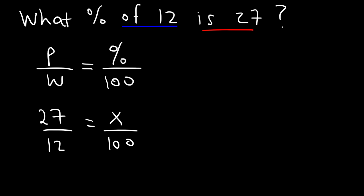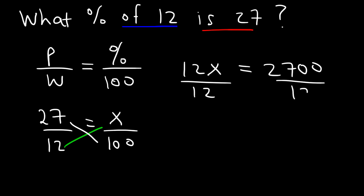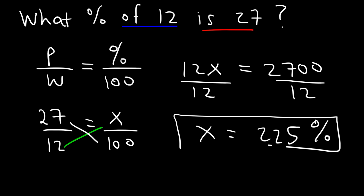Whenever the part exceeds the whole, your percentage is going to be greater than 100. After cross-multiplying, we have 12X is equal to 27 times 100, which is 2,700. All we need to do is divide both sides by 12. 2,700 divided by 12 is 225. So 27 is 225% of 12 — and that's the answer.